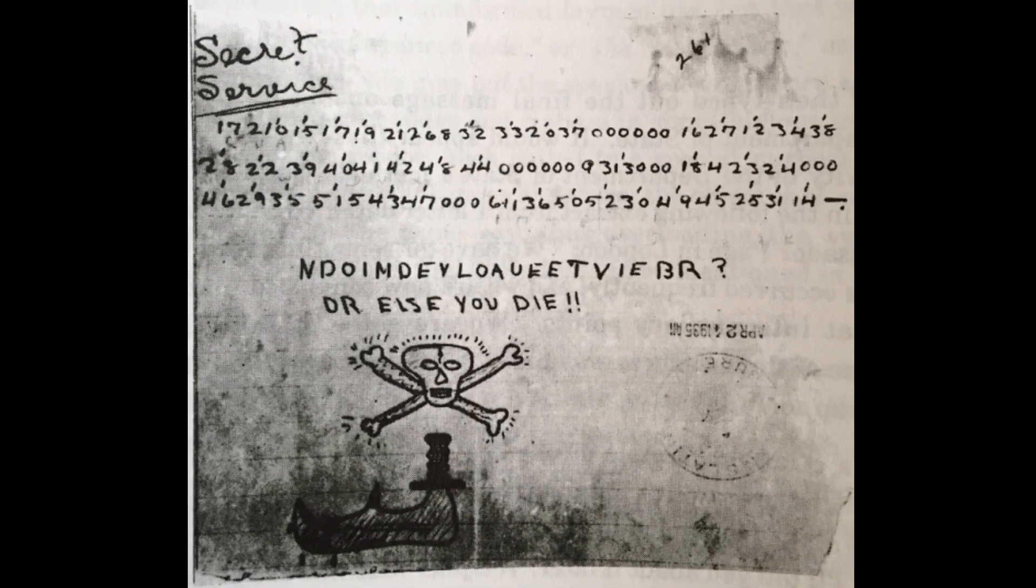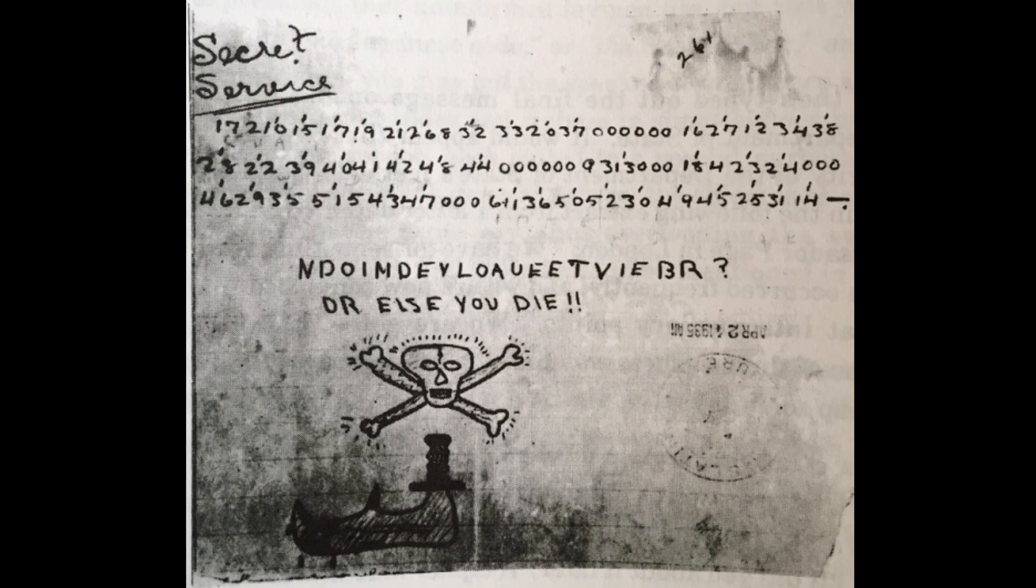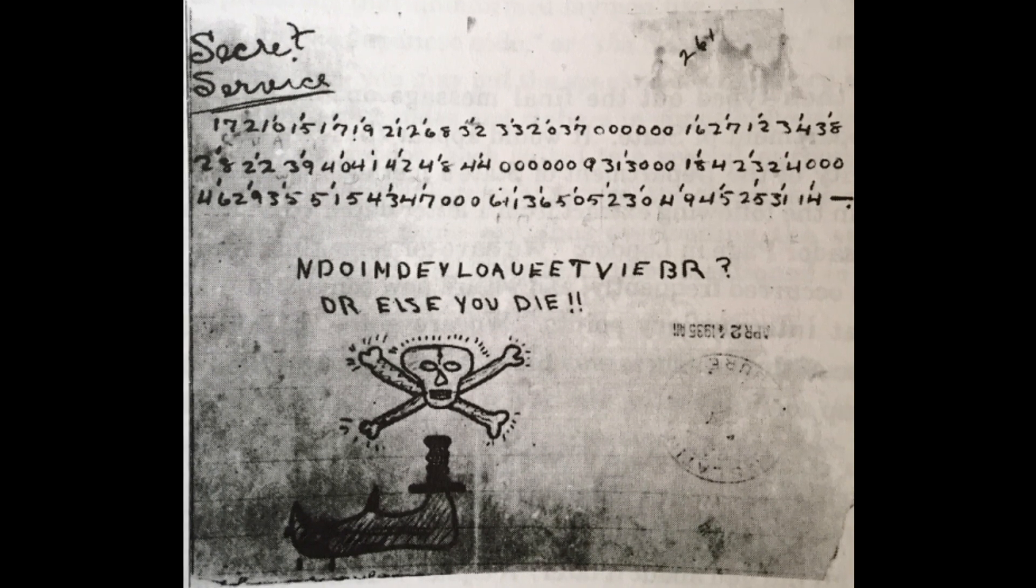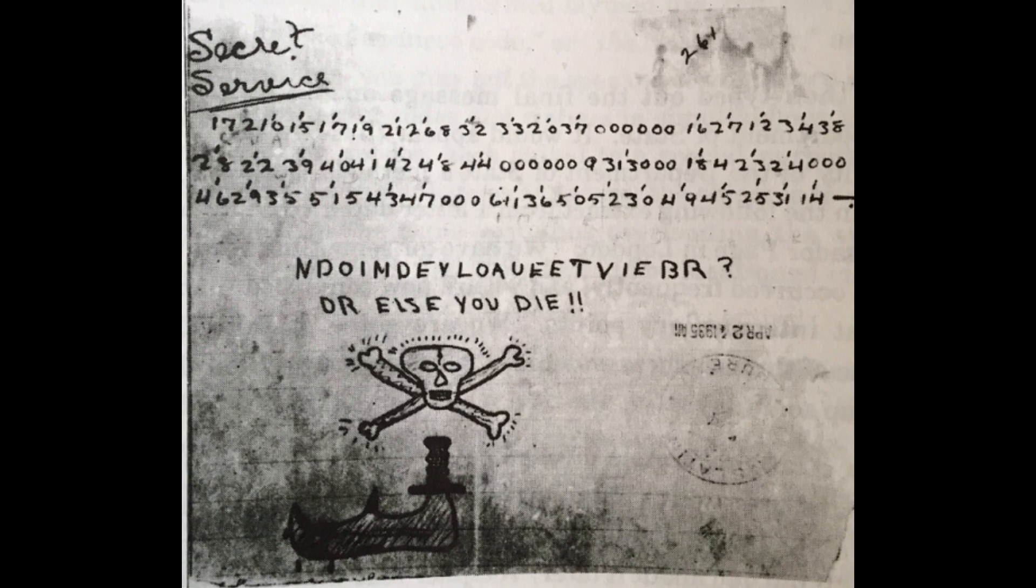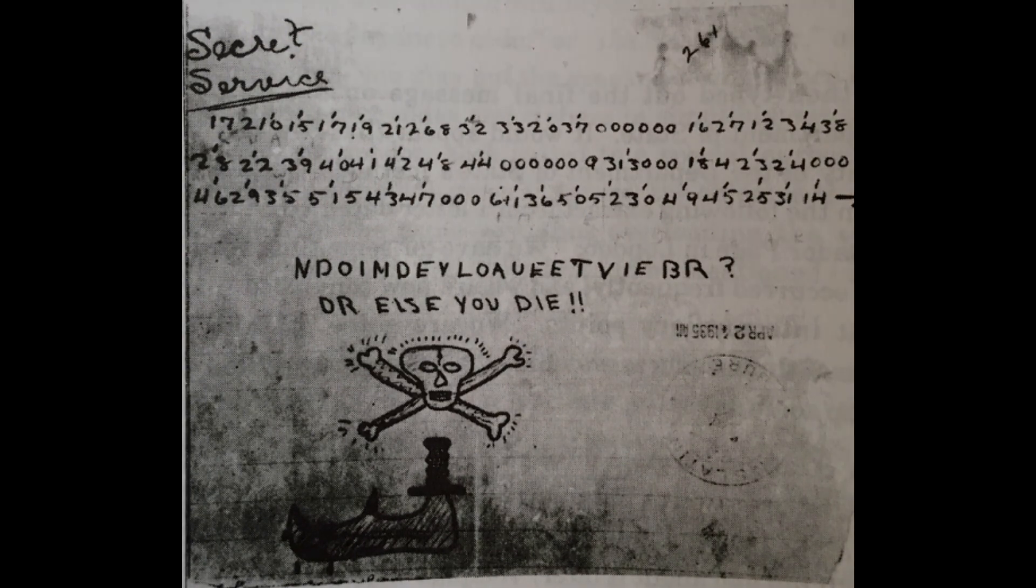There have been some theories proposed over time for what this means, including a folk remedy for an illness that Roosevelt might have had, but no clear explanation. The numerical cipher has never been solved, and may not be a cipher at all, as the entire message seems kind of like a prank. However, it's hard to prove a negative, and so unless the message is deciphered in the future, then this might remain a mystery.